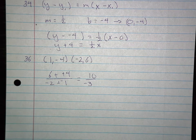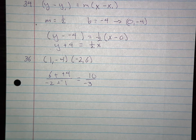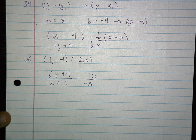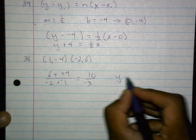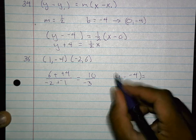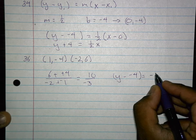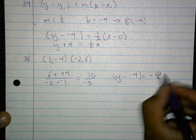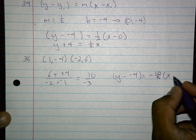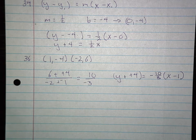Now pick a point. Neither one looks better than the other. I'll pick the smaller numbers, these ones here. I'm going to say y minus negative 4 equals negative 10 thirds times x minus 1. Since they want it in point-slope, I'm already done.